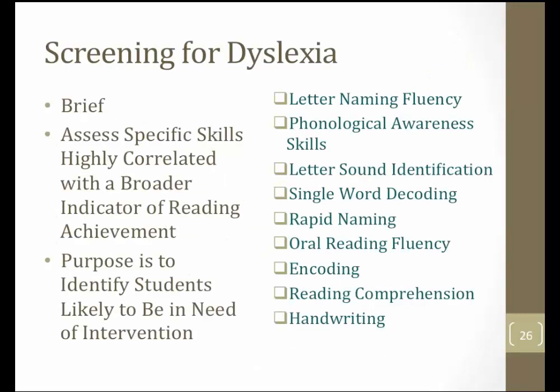When we think about screening for dyslexia, it's important to remember that a screening process should be brief — this is not a formal diagnostic assessment. The screener should assess specific skills highly correlated with broader indicators of reading achievement. The purpose is to identify students likely to need intervention. Broader indicators to include in a dyslexia screener are letter naming, phonological awareness skills, letter-sound identification, single word decoding, rapid naming, oral reading fluency, vocabulary, encoding or spelling, reading comprehension, and handwriting.